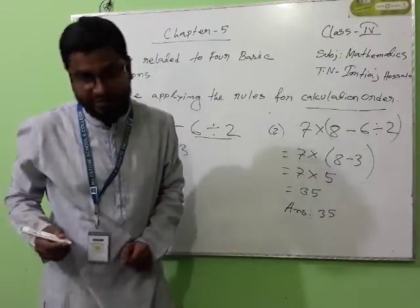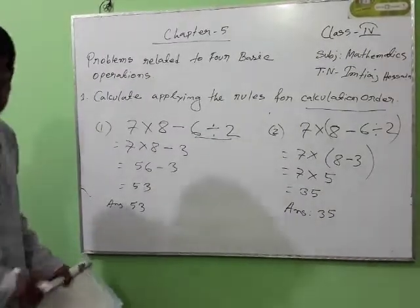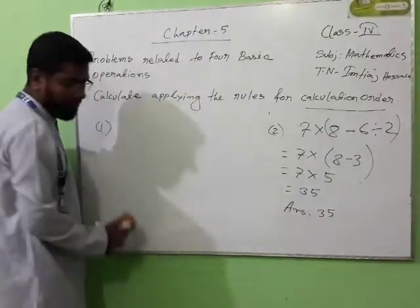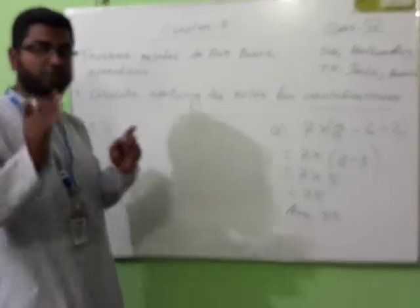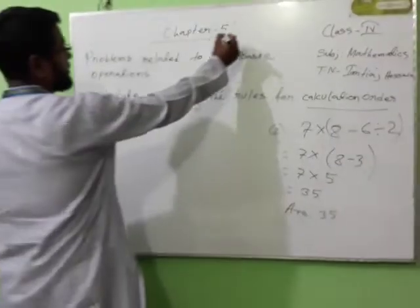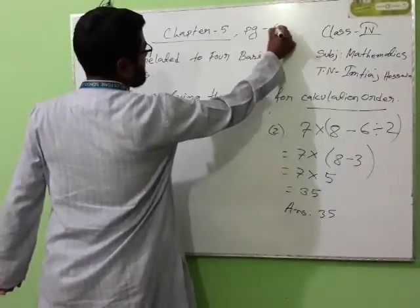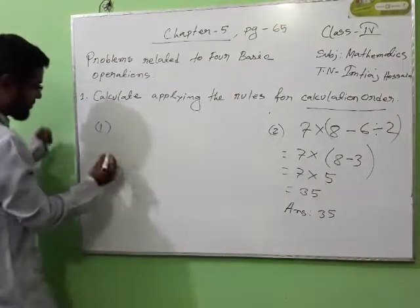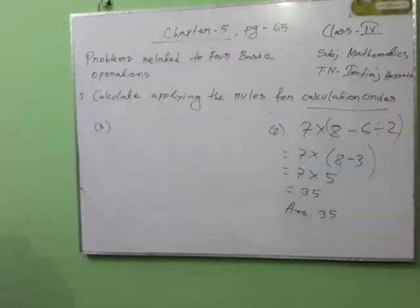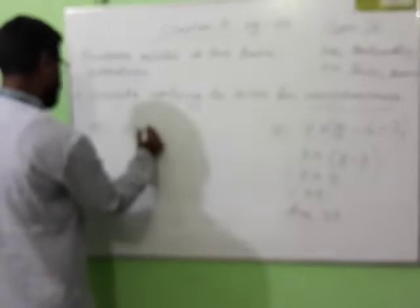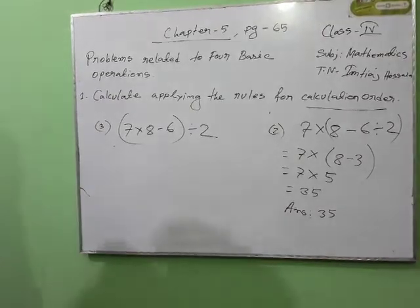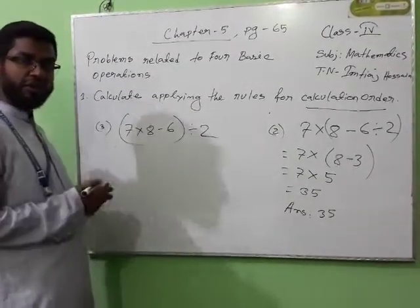Now will I give you one math? Yes. I will give you another math to solve it. And whenever you see my class, you must take your copy and book. This is page 65. Now we will do this three-number math: seven multiply bracket eight minus six, close bracket, divided by two. You will do this first, then tell me the answer. I will wait for you.